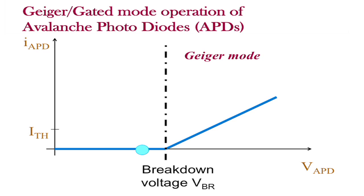Before the gate, you see that there is a bias voltage applied to the APD. See the blue point. During the gate, the voltage is increased above the so-called breakdown voltage. See the green point.